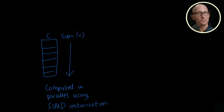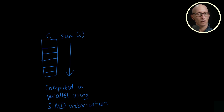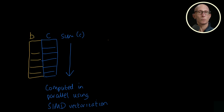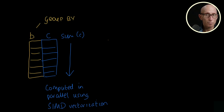One example is aggregations. In our last video, we learnt about the techniques used to make it fast to sum the column C in our table. But now let's say we want to sum column C but grouped by column B.